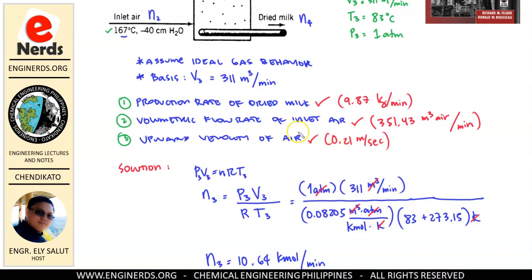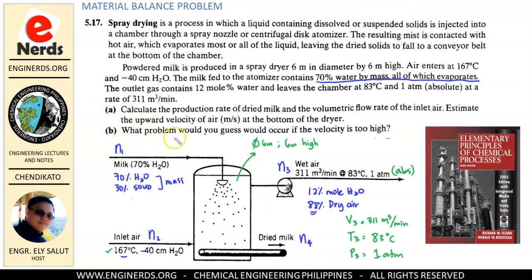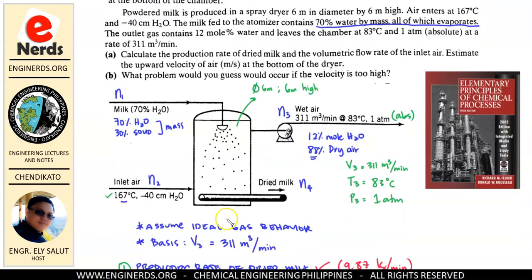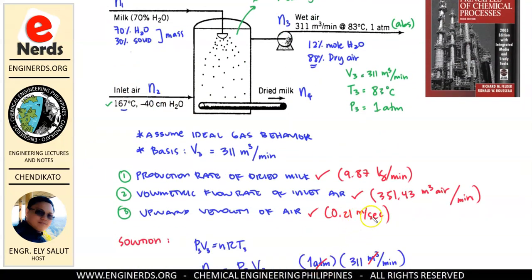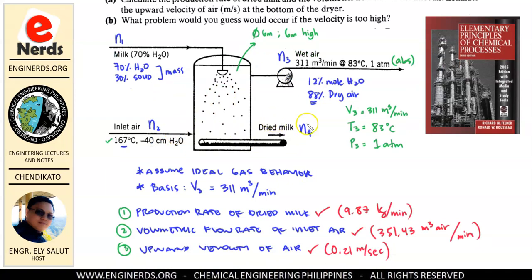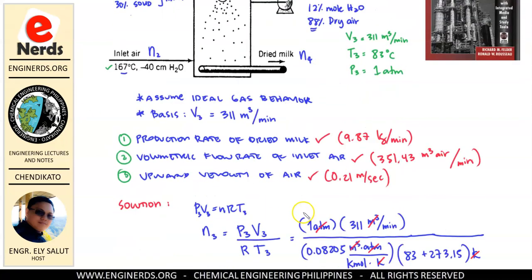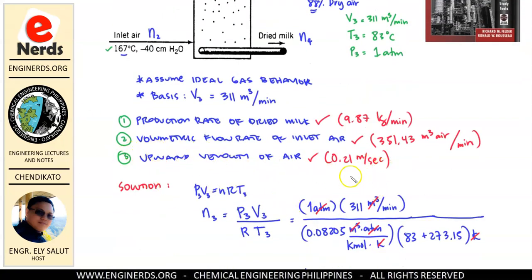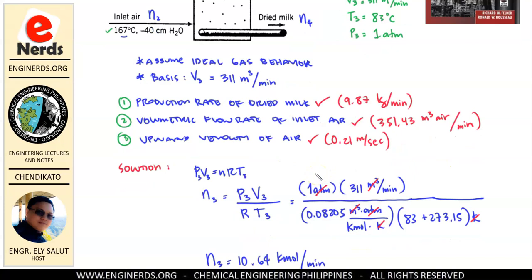The question also asks: what problem would occur if the velocity is too high? With 0.21 meters per second velocity everything is fine, but if we increase it too much, the powdered milk would be blown out of the reactor by the air instead of falling to the conveyor belt. I hope this helps you in your study for material balance. Thank you very much and have a nice day.